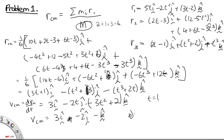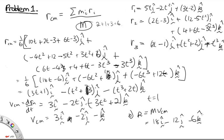Part B asks us to find the momentum of the system at t equals 1. The momentum for the system is just equal to the total mass times the velocity of the center of mass. So we multiply by 6, giving us 18i minus 12j minus 6k as the total momentum for the system.